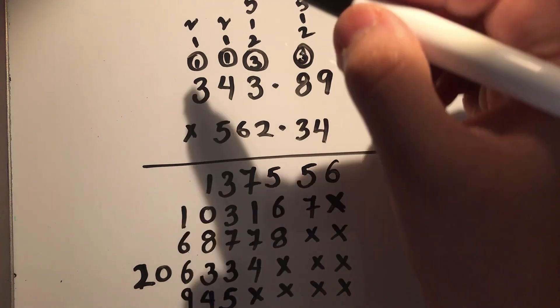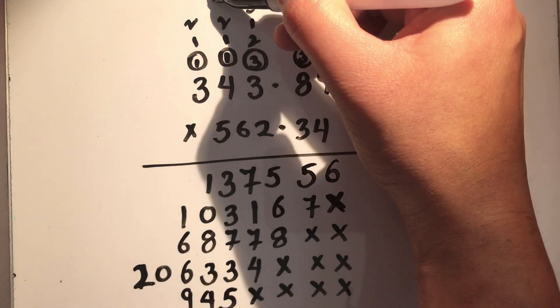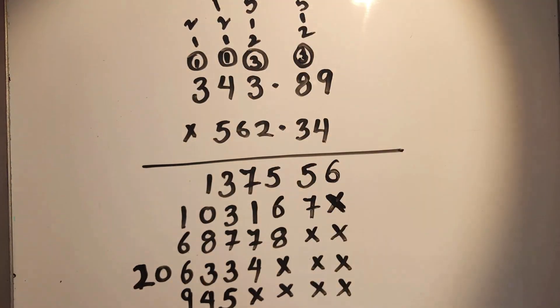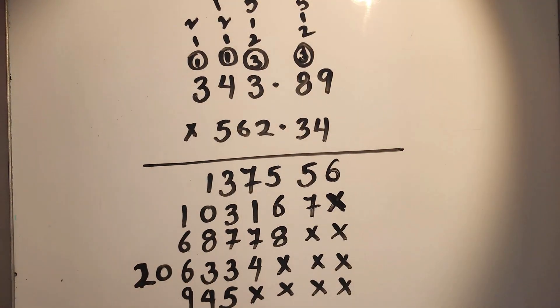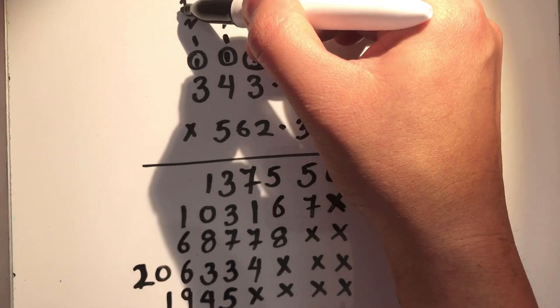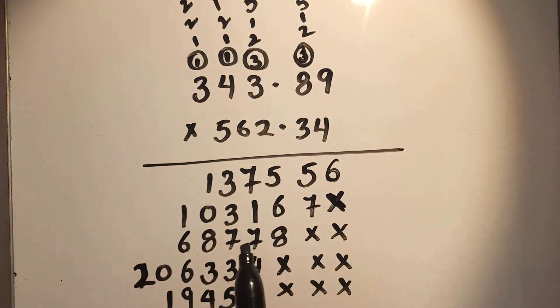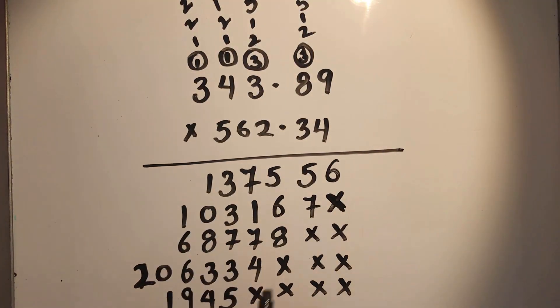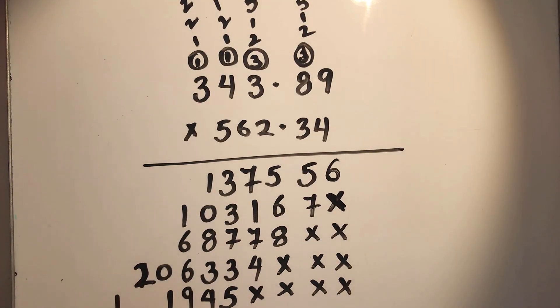So 1 carry over. 5 times 4 is 20, plus 1 is 21, 2 carry over. 5 times 3 is 15, plus 2, which is 17.